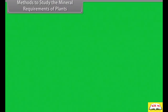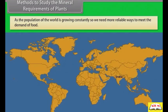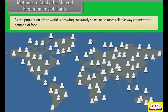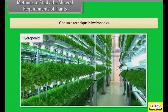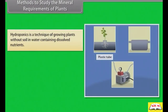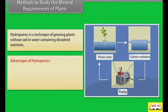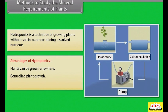Methods to study the mineral requirements of plants: as the population of the world is growing constantly, we need more reliable ways to meet the demand for food. One such technique is hydroponics. Hydroponics is a technique of growing plants without soil, in water containing dissolved nutrients. Advantages of hydroponics: plants can be grown anywhere, and controlled plant growth, water and nutrients are conserved.